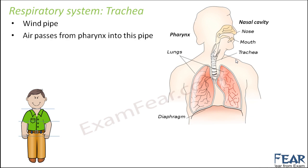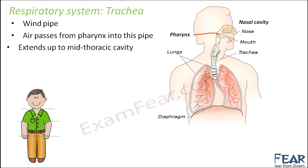Air passes from pharynx into this pipe. This portion was pharynx. From pharynx it passes through the trachea. This structure which you see is trachea. It extends up to the mid thoracic cavity.